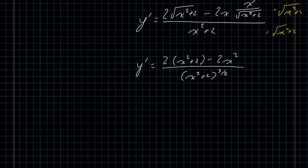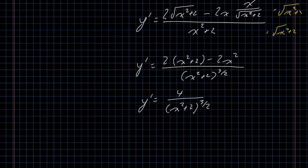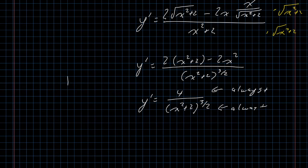Cleaning up: 2x squared plus 2 minus 2x squared is just 4. So the numerator is 4, which is always positive. The denominator has x squared plus 2, which we already established is always positive. So the derivative is always positive — the function is always increasing, with no local extrema.